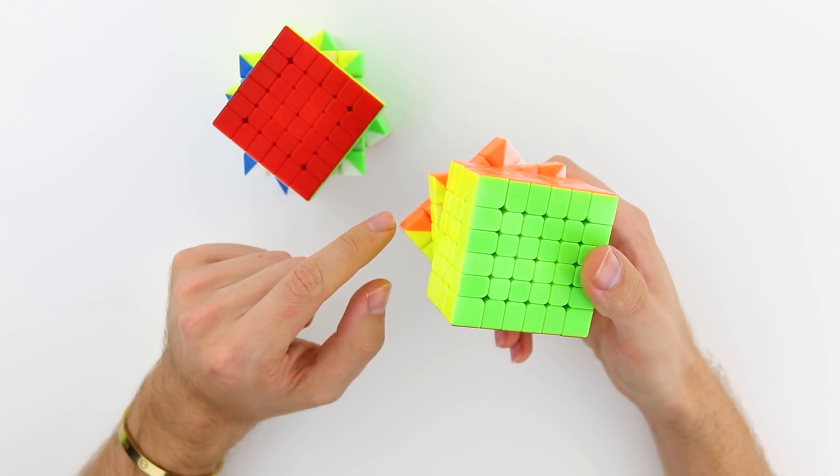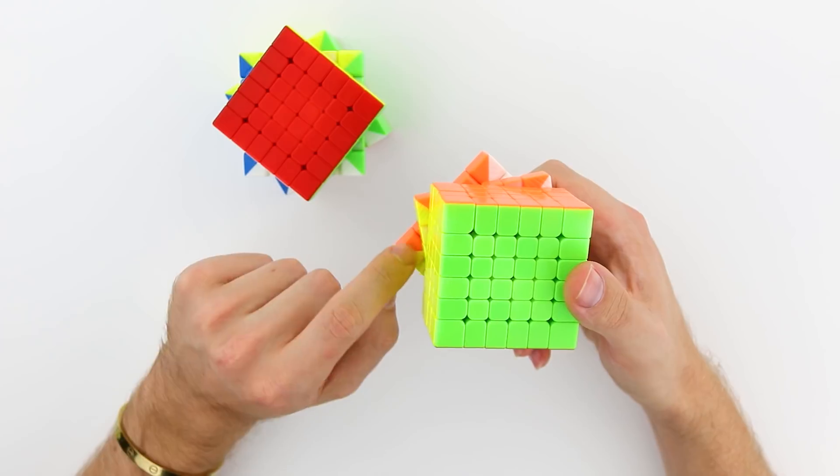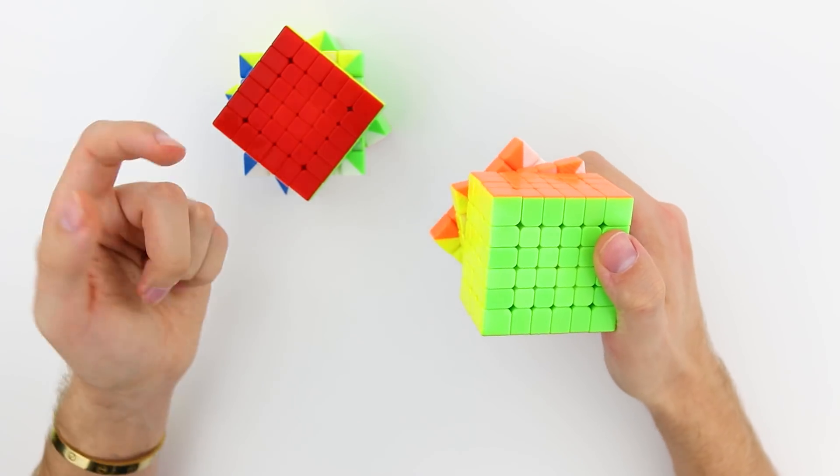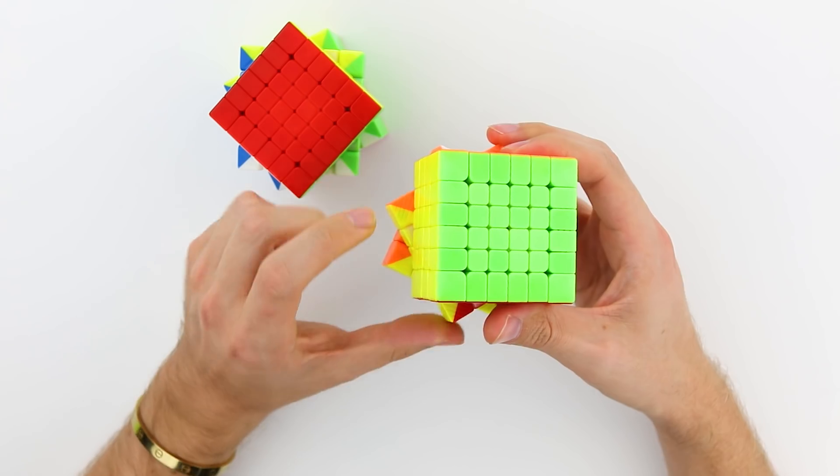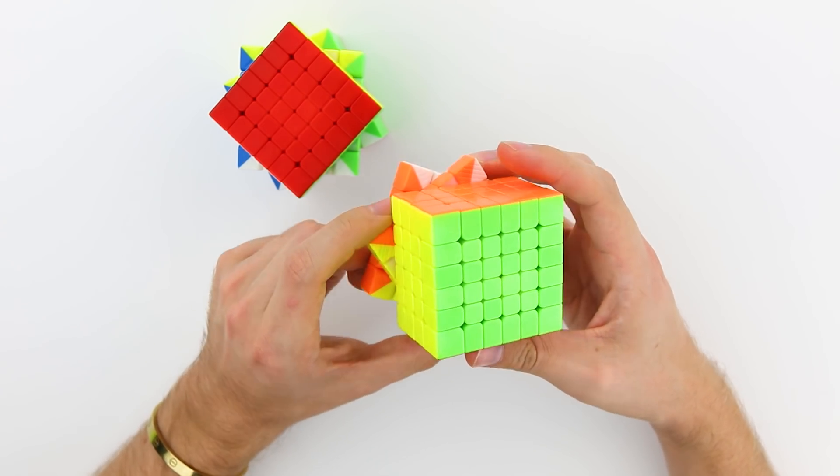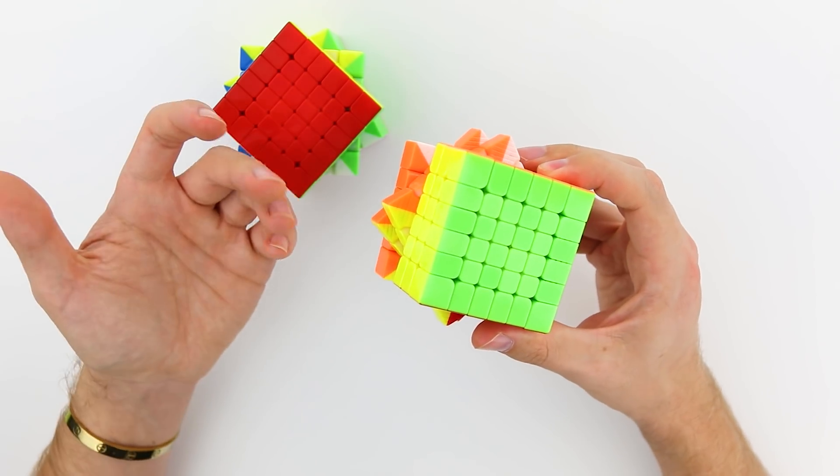And the outermost layers also have those. Oh, duh. Yeah, so the second layers do as well. So pretty much all layers have these grooves that are in them. And I think that's what really contributes towards this smoother feeling.